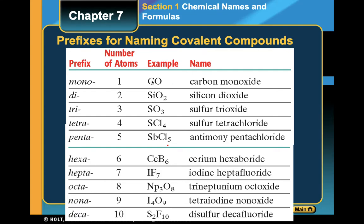For example, carbon monoxide tells me that I have one oxygen. And if I had carbon dioxide, that would be CO2 because I would have two oxygens. Now a quick rule: if the first atom in your compound has only one, you don't have to indicate mono. This is why it's not monocarbon monoxide. If the first atom has only one of them, you don't have to write mono because it's at the very beginning.